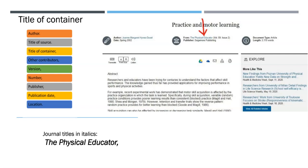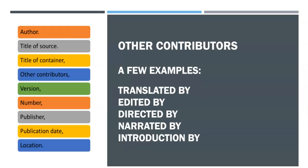Now let's get back to the citation at hand. There's no period after the journal title in this section — use a comma here. You might have other people who contributed to the work besides the author. If it's important to your project or helps identify the source, enter the name with a description of the role, such as translated by, edited by, directed by, narrated by, or introduction by. Generally, you'll find additional contributors for books or media, not for journal articles.